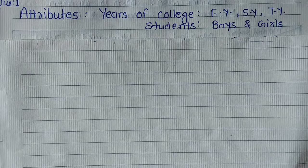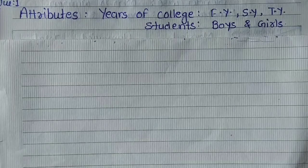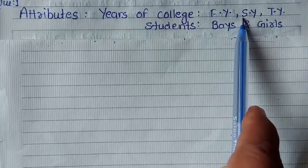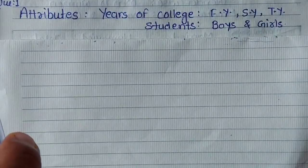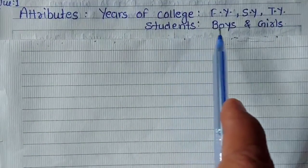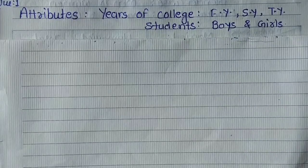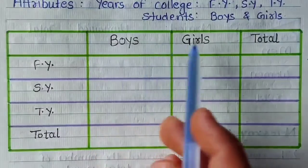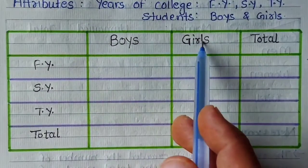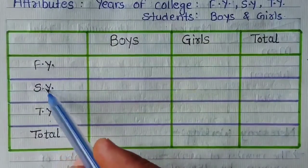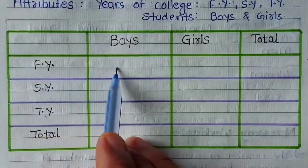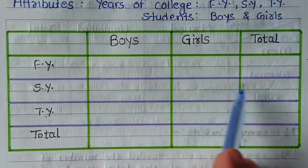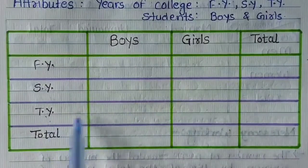तो चलिये इसकी calculation start करते हैं. Friends, there are two attributes given in the sum. First, years of college — FY as first year, SY as second year, and TY as third year. And the second attribute is students — those are boys and girls. So according to these two attributes our table will be like this. आप देख सकते हैं, मैंने यहां पर second attribute boys and girls indicate किया है, और यहां पर first attribute years of college यानि FY, SY और TY mention किये हैं. तो FY के boys और FY की girls means FY के total students, SY के boys और SY की girls यानि SY के total students, TY के boys, TY की girls यानि TY के total students.